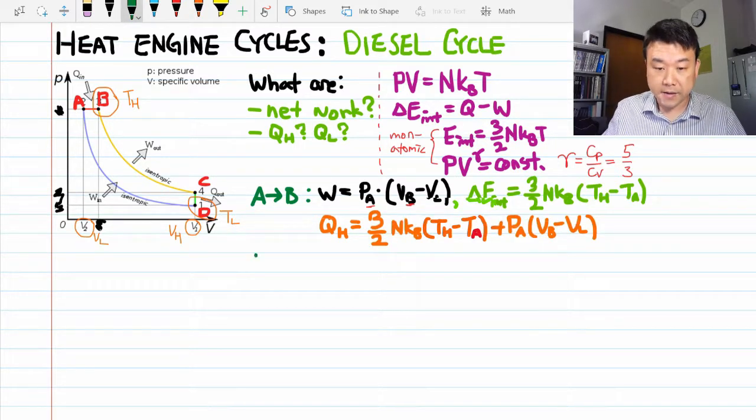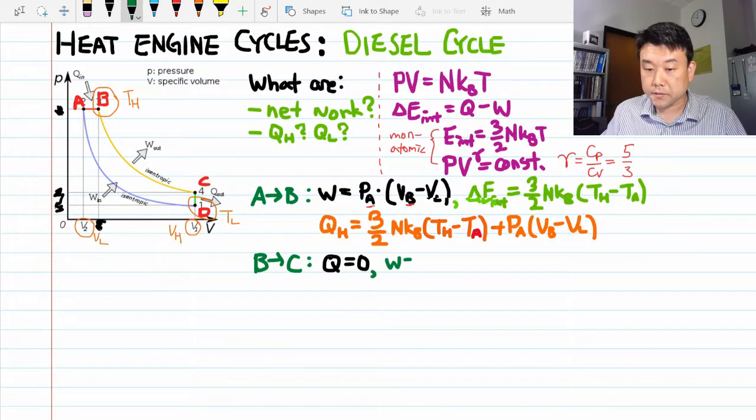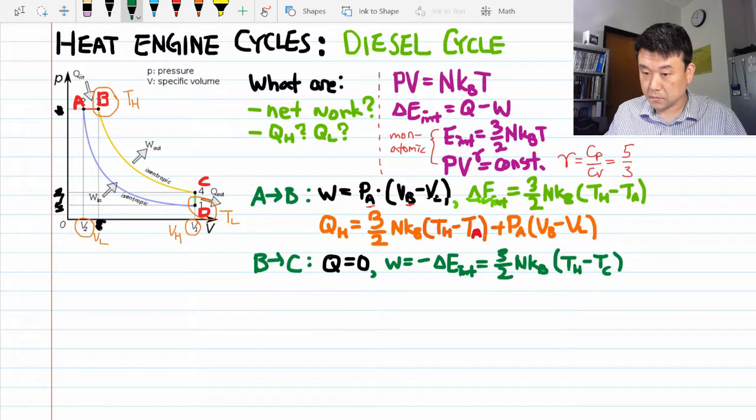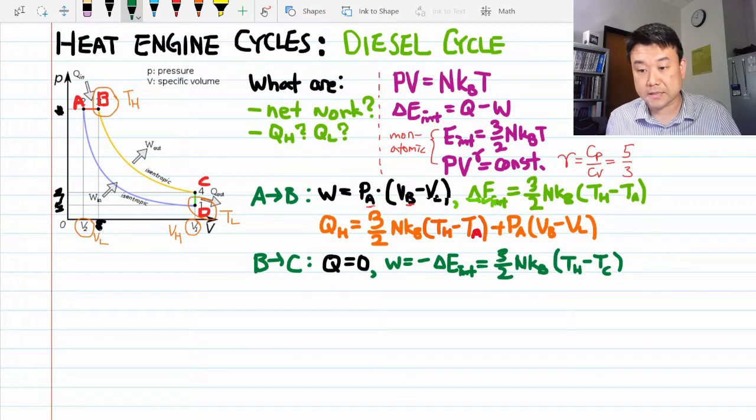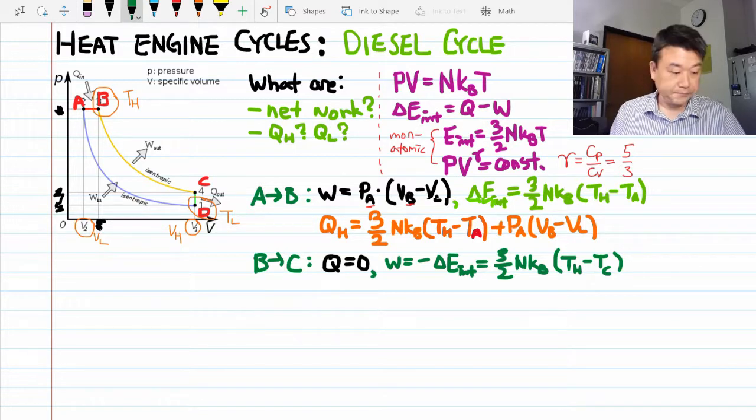Alright, let's keep going. The adiabatic expansion from B to C. So now things get easier. The heat transfer is zero. It's adiabatic. So we can say that the work done is minus of change of internal energy. And we can express that in terms of the temperatures. The temperature point C is lower than the hottest temperature. So this is positive, as we expect it to be. Because there are so many minus signs, I want to make sure I didn't make a sign error.